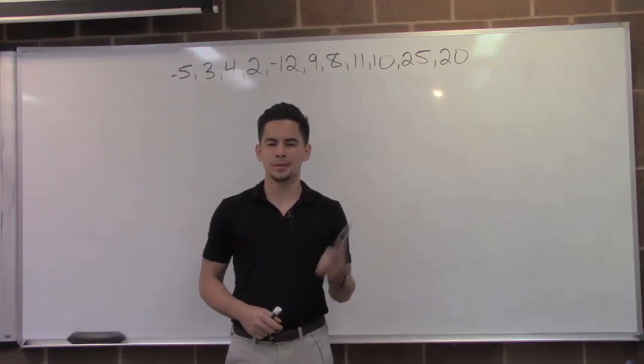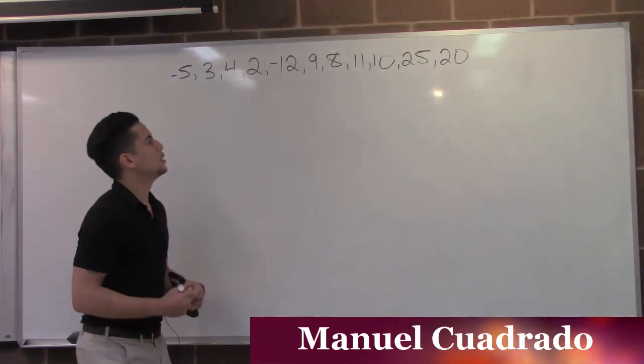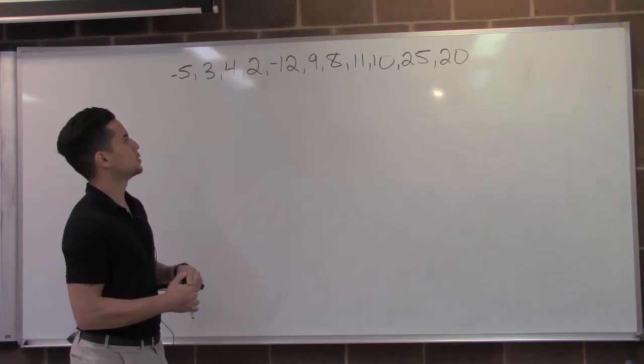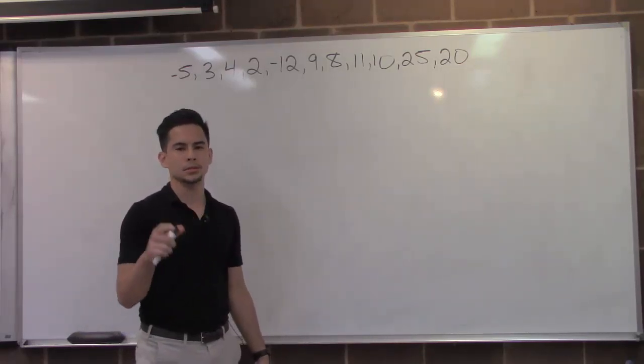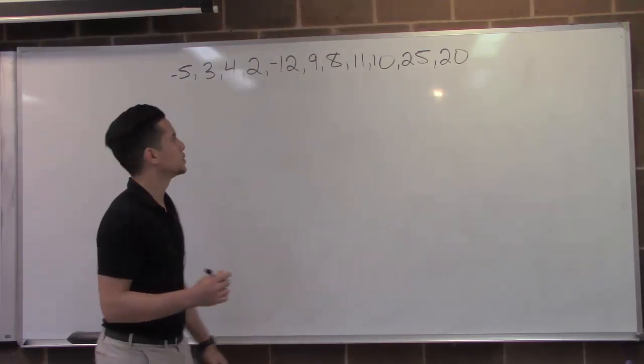Welcome to HelpYourMath.com. This is a problem for the five number summary. The first thing you want to do here is order them from either greatest to least or least to greatest.